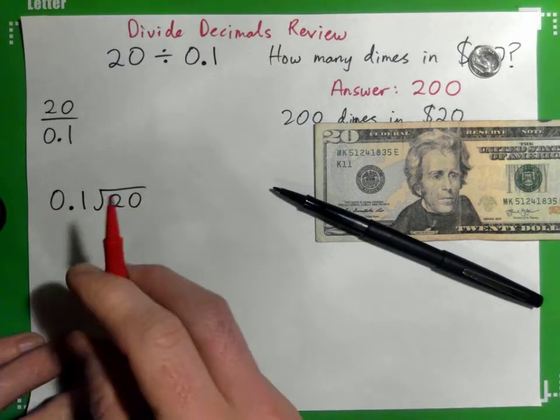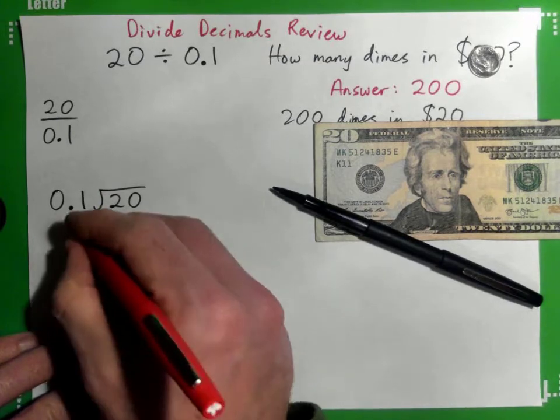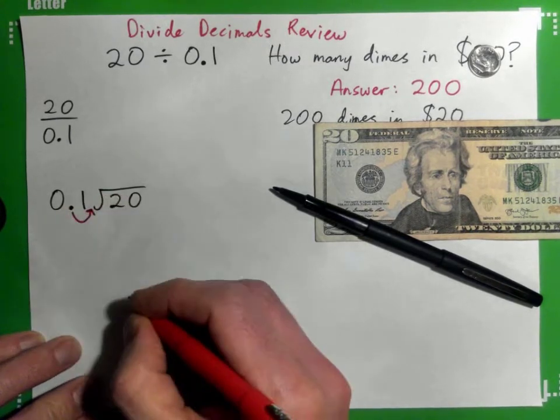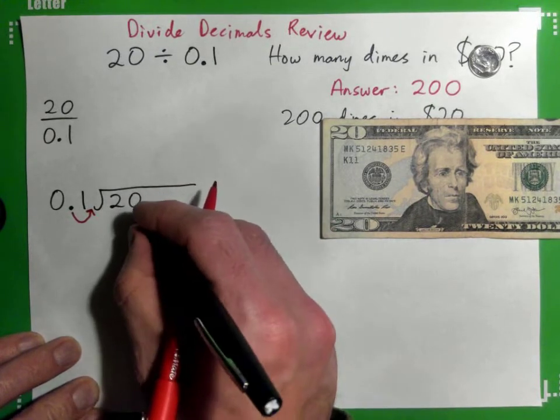How many spaces to the right? One space. Now the trick is, the rule is, if I move that one space I must move this decimal place one space.